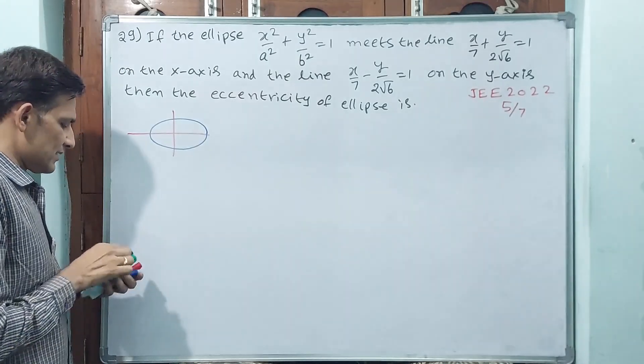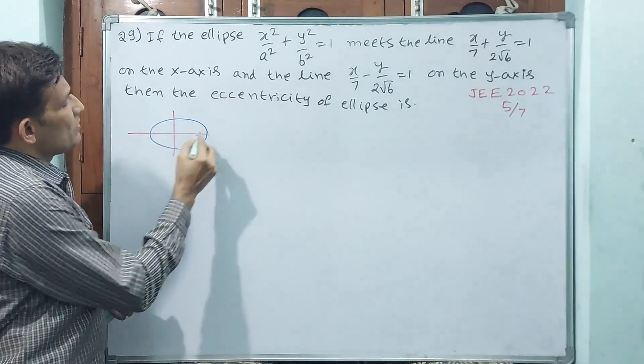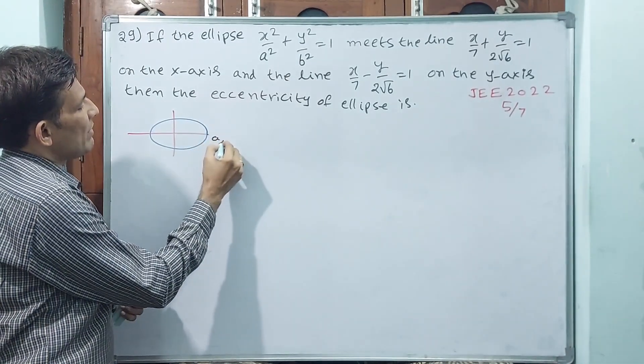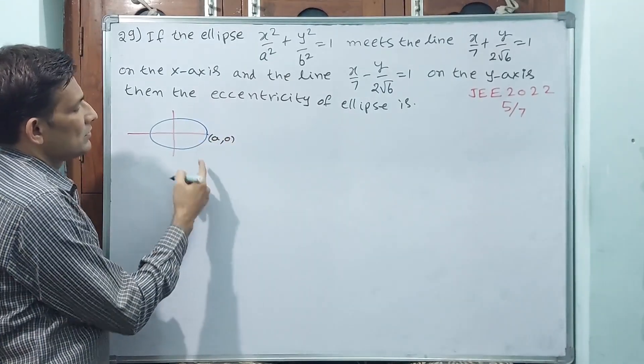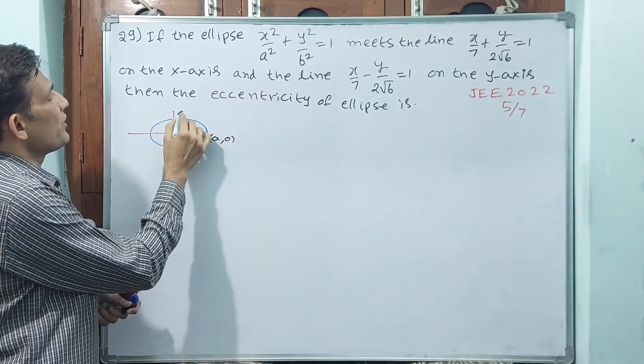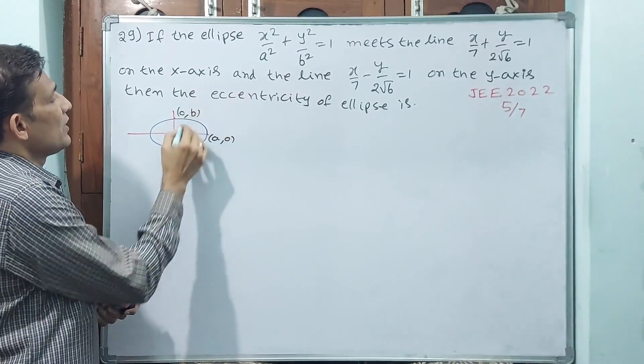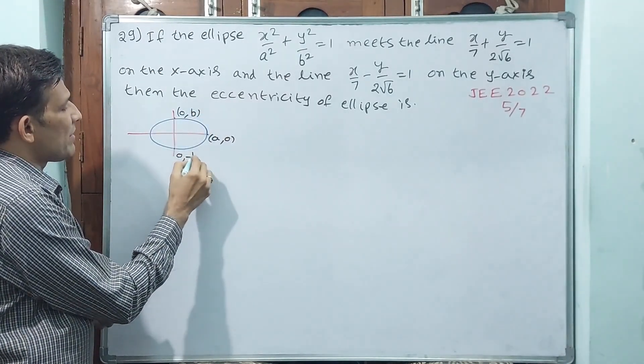Say major axis is on x-axis. Normally this point we are going to get is (a, 0). This point we are going to get is (0, b). If it is minus then (0, -b).